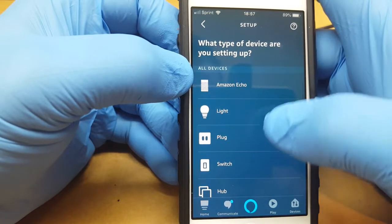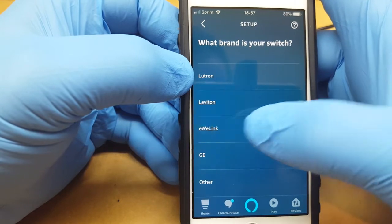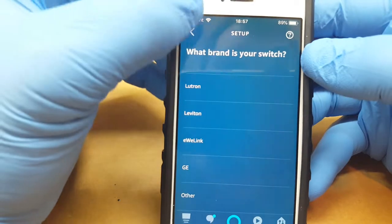Then you can scroll down and we'll just say Switch. Then there's eWeLink, so just follow the instructions on it.